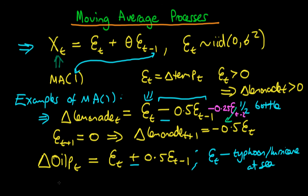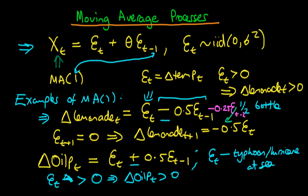Let's say at time t there is a hurricane, meaning et is greater than 0. Assuming there was no hurricane in period t minus 1, the change in oil price at time t is going to be greater than 0 — an increase in oil price. This makes sense because the hurricane disrupts the supply chain for tankers transporting oil around the world.